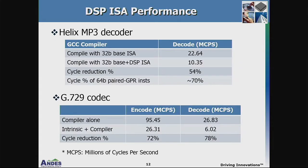Now let's look at some real-world applications of our DSP ISA extension, using our V3 experience to show performance numbers. The first application is the Helix MP3 decoder. For this application we did not use hand optimization — we just directly used the compiler with and without the DSP extension to compare. We achieved a cycle reduction of 54%, more than two times speedup. For this application, 70% of cycles are spent on instructions using the 64-bit data type with pair registers.